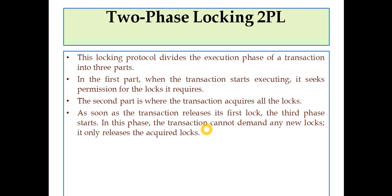To repeat: first part, when the transaction is going to start its execution, it seeks permission for all the locks it requires. Second part, the transaction acquires all the locks. Third part begins as soon as the transaction releases the first lock. At this phase, the transaction cannot demand any new locks — it can only release the acquired locks.